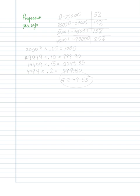In a progressive tax system, it's the exact opposite of a regressive tax system. The tax rates go up as your income increases. Using the same brackets as before, I'll simply reverse the tax rates, so that as income goes up, the tax rate goes up as well.